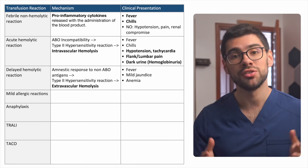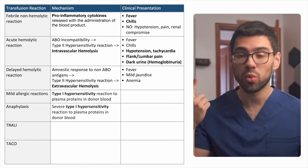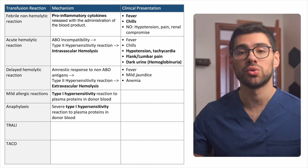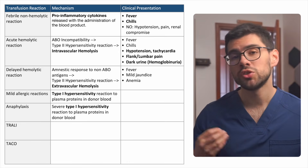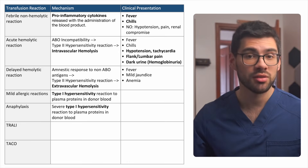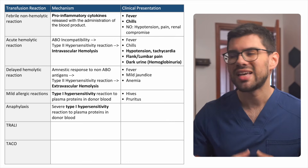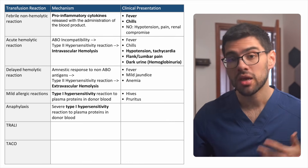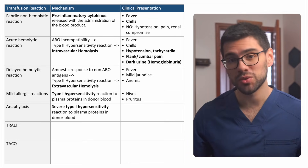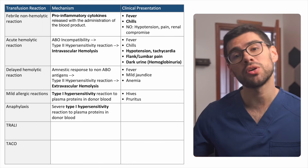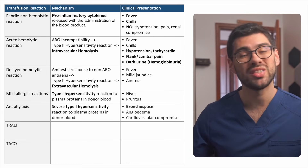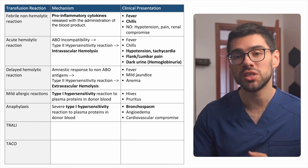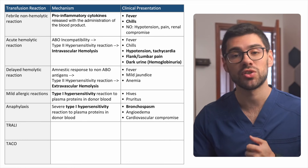Next up, we have allergic reactions. These are caused by a type 1 hypersensitivity reaction to plasma proteins in the donor blood. The spectrum goes from mild to potentially lethal. Mild allergic reactions typically present with just skin symptoms like hives or itching. But anaphylaxis, which is the most severe complication, presents with systemic compromise characterized typically by bronchospasm, angioedema, and cardiovascular collapse.